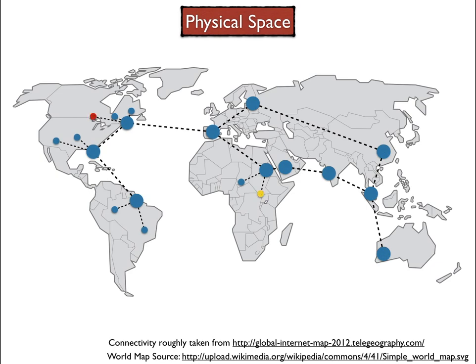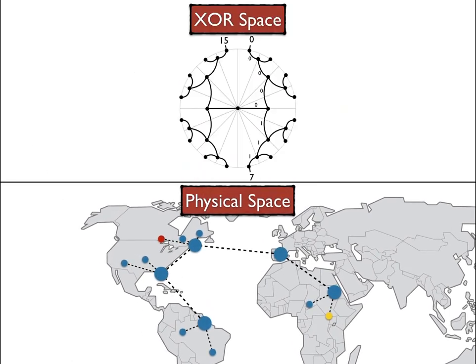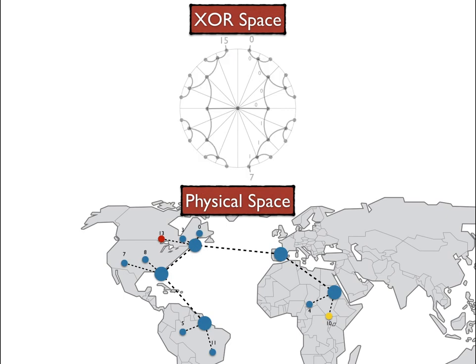We'll look at the case where two different machines — one situated in Canada and one in Africa — might want to talk to one another while they're part of an overlay network. These machines have IDs that represent their position in XOR space. For instance, the red machine has the ID 13 and the yellow machine has the ID 10.